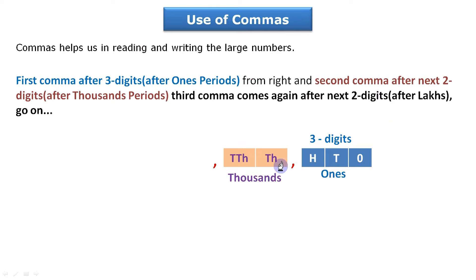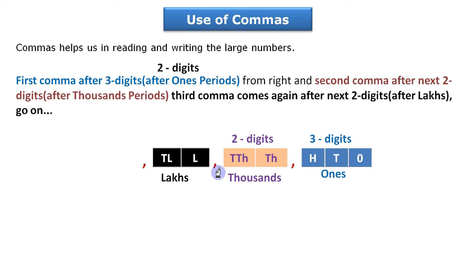The second comma is after two digits from the first comma — leave two places and put the second comma, that is after the thousands period. In the same way, the third comma is after another two digits — leave two places and put the third comma after the lakhs period, leaving the lakhs and ten lakhs places.